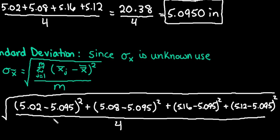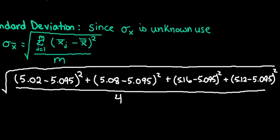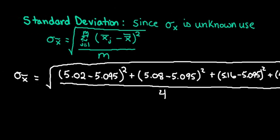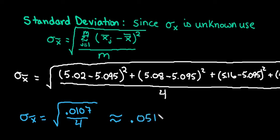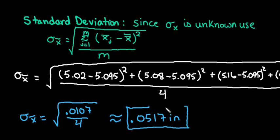Plugging it all into the calculator, the sum of the numerator — all those squared deviations added together — comes out to 0.0107. Dividing by 4 and then taking the square root, rounded to four decimal places, gives us a standard deviation of the sample means of 0.0517 inches.